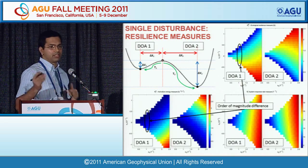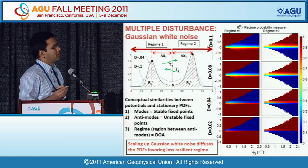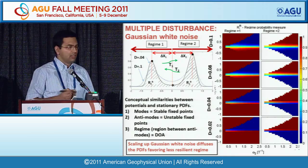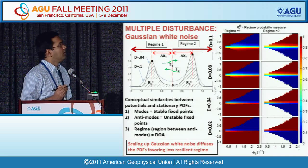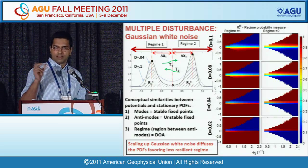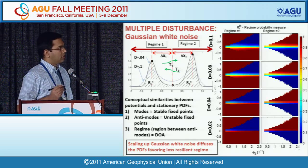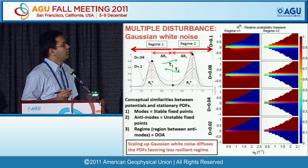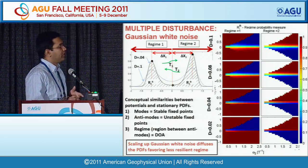There is also a recovery rate measure — how fast the system recovers — but for lack of time I'll move on to noise-driven dynamics. When we subject the system to Gaussian white noise, we are interested in stationary PDFs. This is a stationary PDF of the same problem showing a bimodal distribution with a double peak. These peaks correspond to the bottoms of the potential wells — the stable fixed points — and the troughs correspond to the unstable fixed points. Similar to the domain of attraction concept, you can define a regime concept separated by low-probability zones. From these, you can derive measures such as switching frequency and regime probability.